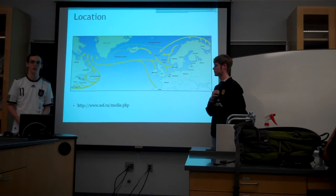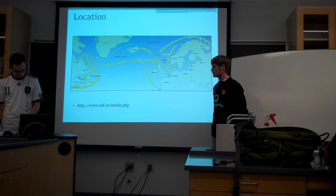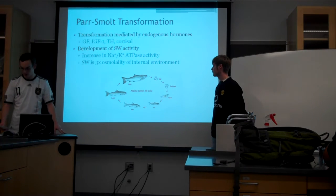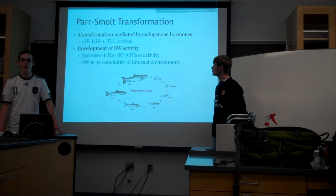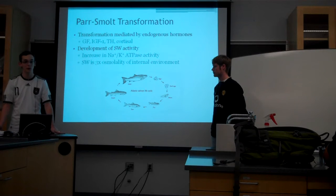The parr-smolt transformation in the salmon is really important in the life cycle. It prepares juvenile salmon for downstream migration and ocean entry, and it does this by morphological, physiological, and behavioral change.